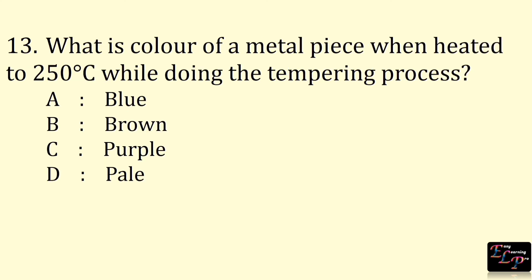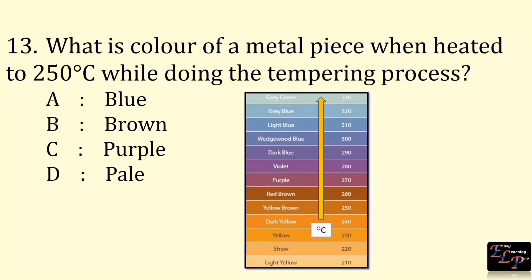Next question: what is the color of a metal piece when heated to 250 degrees Celsius while doing the tempering process? This is the chart for the tempering process. For 250 degrees, the color is brown.